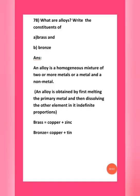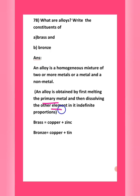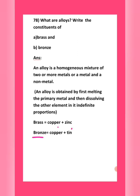Question number 78: what are alloys? Write the constituents of brass and bronze. An alloy is a homogeneous mixture of two or more metals, or a metal and a non-metal. An alloy is obtained by melting the primary metal and dissolving the other elements in definite proportions. Brass is an alloy of copper and zinc. Bronze is an alloy of copper and tin — don't confuse the two.